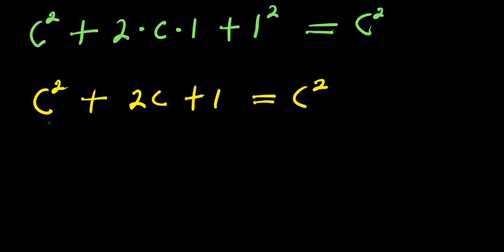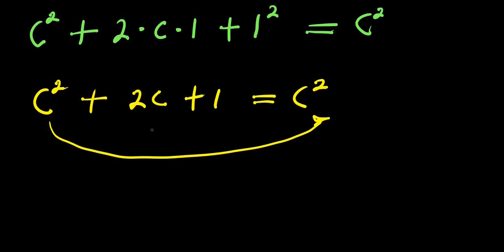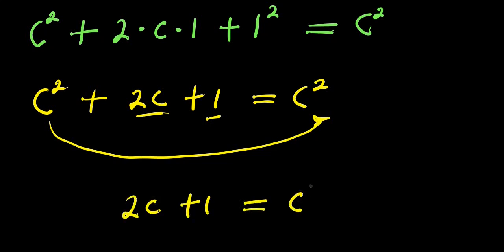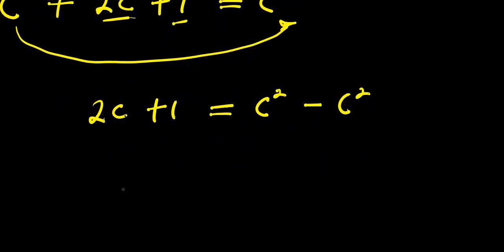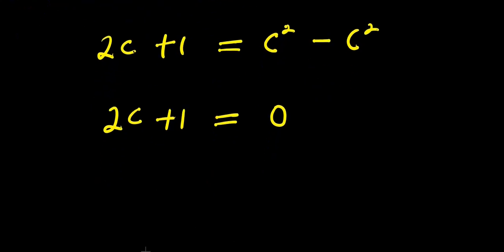What happens is we can move this c squared over here, so it's going to change to negative because it's positive on the right side. What we are going to have left is 2c plus 1 equals c squared minus c squared, which is zero. So we have 2c + 1 = 0.